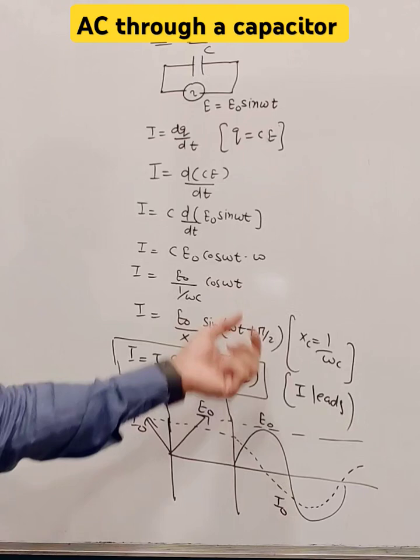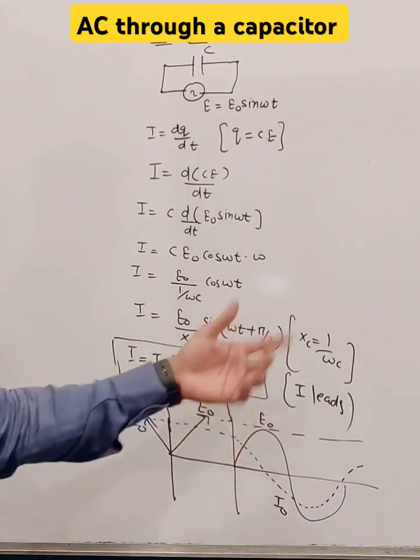We may write it as cos of omega t is I equals I naught sine of omega t plus pi by 2.